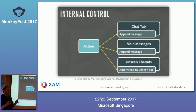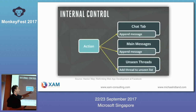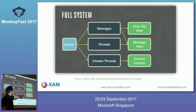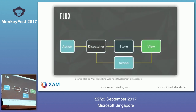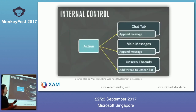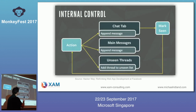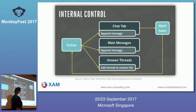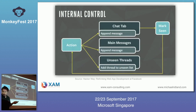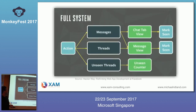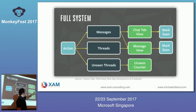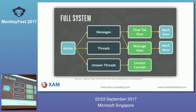Taking the Facebook chat app as an example: the messages data set flows to the chat tab view and the messages view. What Facebook liked about Flux is the internal control — the action comes in and the data changes, but how the data changes is internalized in the data store. When there's another action — say marking a message as seen — you go back around again into the data set. Both the chat tab and chat view can mark as seen, that becomes an action, goes through to the store — always unidirectional.